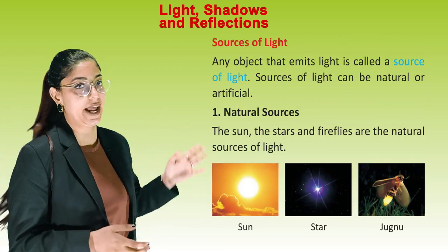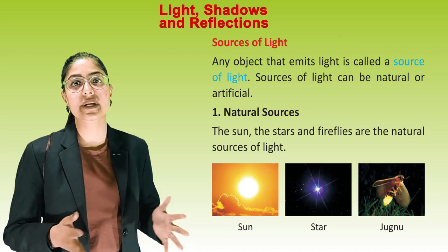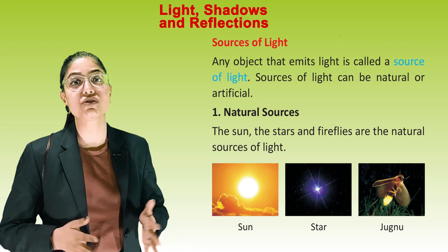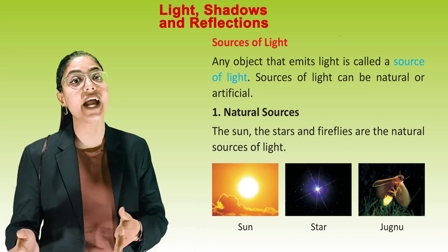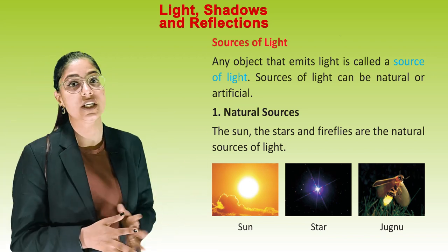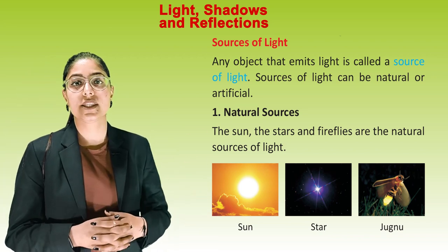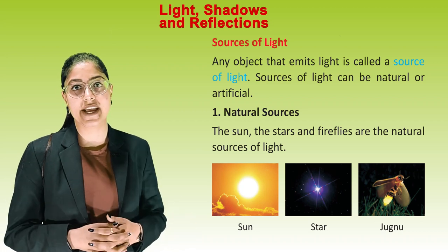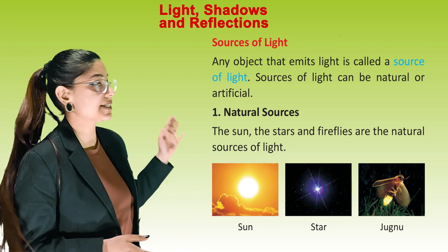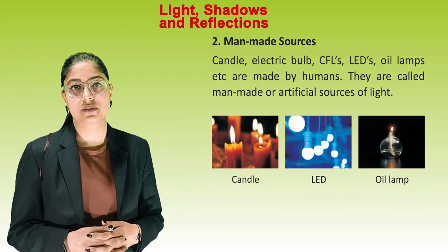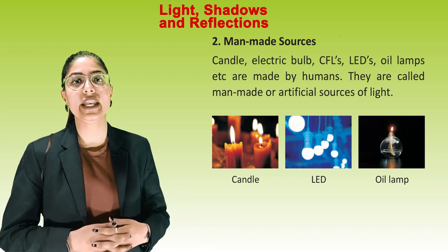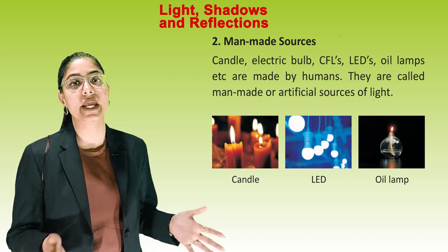Sources of Light. Any object that emits light is called a source of light. Sources of light can be natural or artificial. Natural sources include the sun, the stars, and the fireflies. Man-made sources include candles, electric bulbs, CFLs, LEDs, oil lamps, etc., which are made by humans.